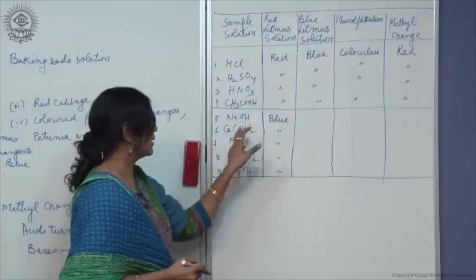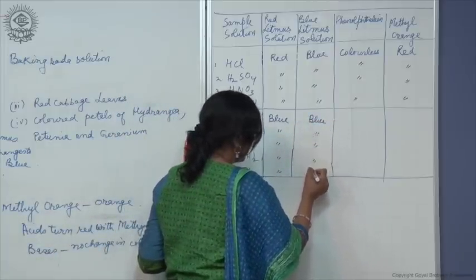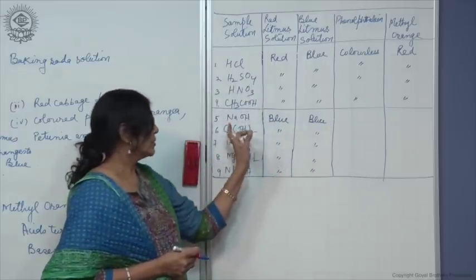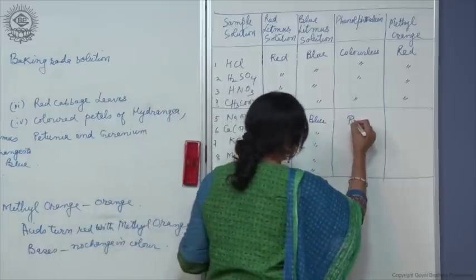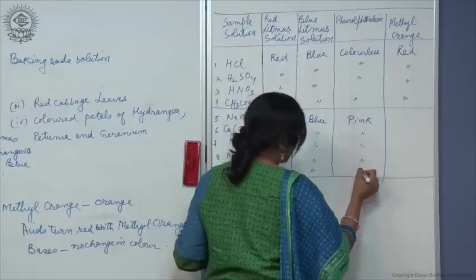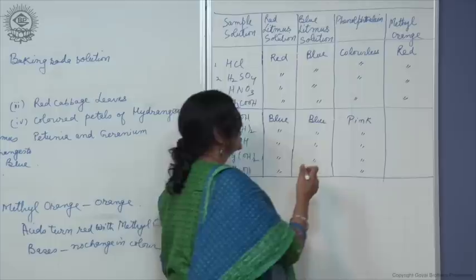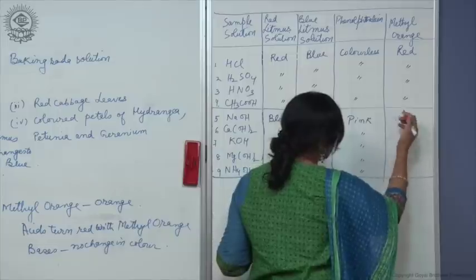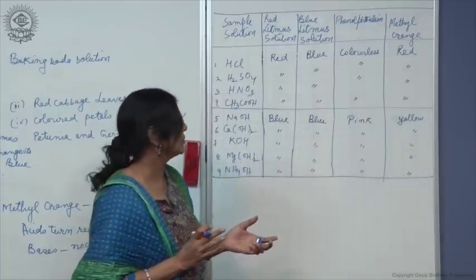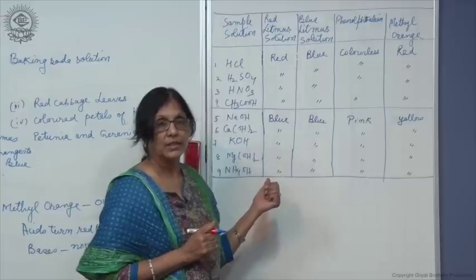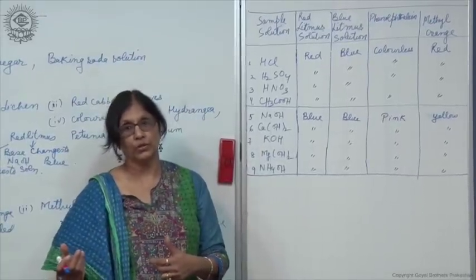By using all these indicators, we can differentiate whether the given sample is an acid, a base, or a neutral solution like distilled water. When methyl orange is added to a base, it changes only slightly to yellow but does not turn red, so we can differentiate it from an acid.